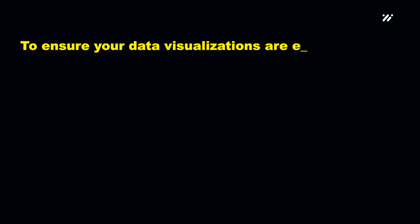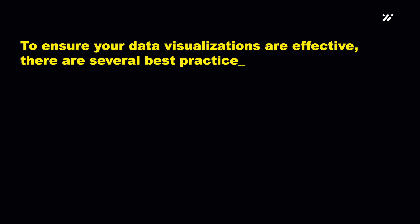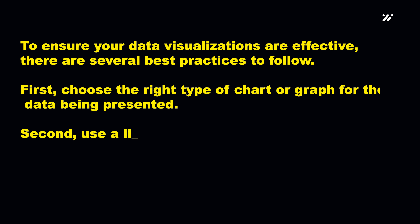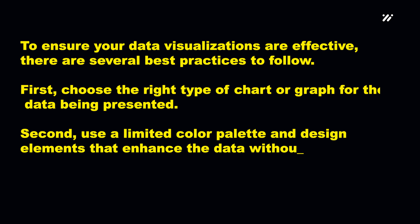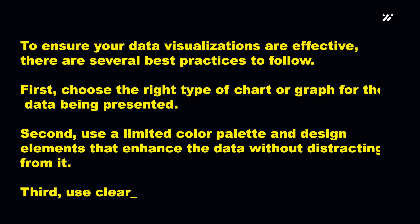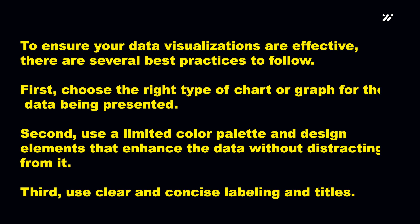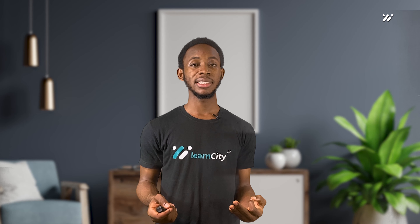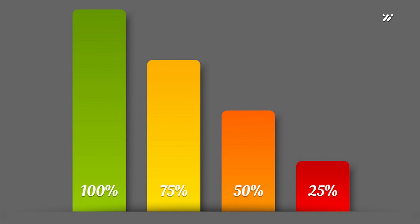To ensure your data visualizations are effective, there are several best practices to follow. First, choose the right type of chart or graph for the data being presented. Second, use a limited color palette and design elements that enhance the data without distracting from it. Third, use clear and concise labeling and titles. Take a look at this example of an effective data visualization — by using a simple bar chart with clear labels and a limited color palette, the data is easy to understand and the key takeaways are immediately apparent.